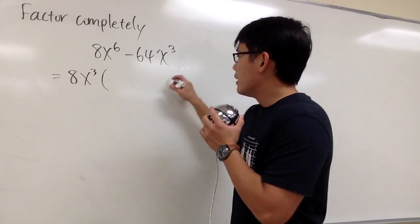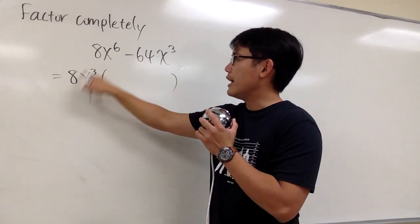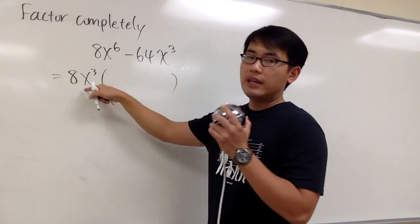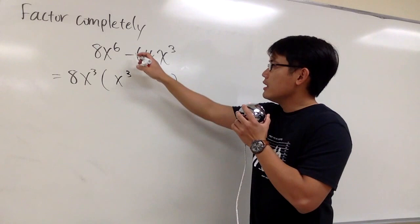So let's see. Then, originally this was 8x to the 6th power, but we factor out the 8 already. We took out 3 of the x, so we have x to the 3rd power only. And then we have the minus.